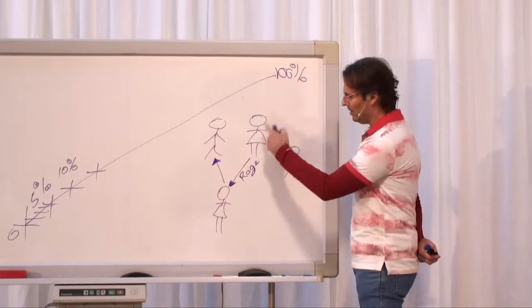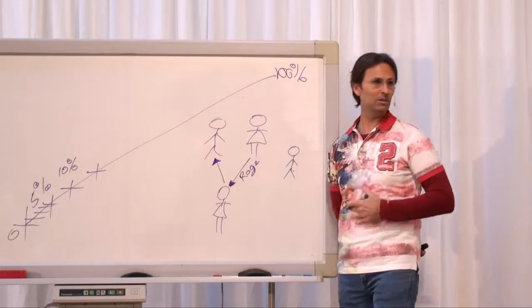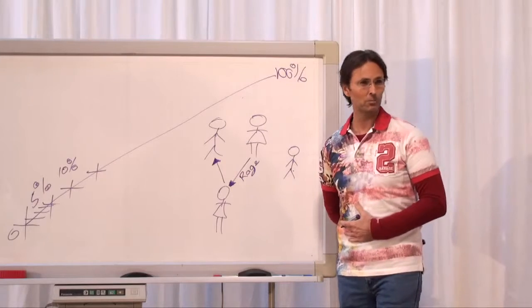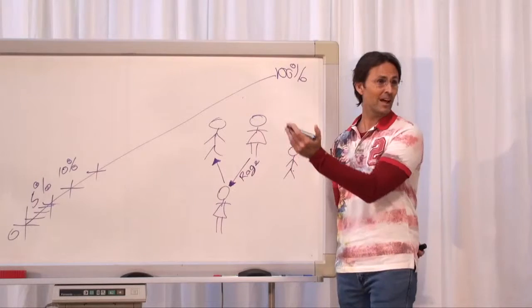So mum, by projecting all this rage at Laura, created in Laura an addiction, a hole, an emotional hole, which Laura then wanted fulfilled by having a relationship, a different kind of relationship with her dad.